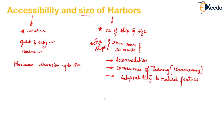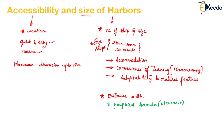Entrance width is one of the important criteria. We have an empirical formula for calculating the entrance width, given by Stevenson — it has limited application. The formula is: H = 0.0127 × √(l/L) − 0.027 × ⁴√D × (1 + L/L) × capital H. Here capital H is the height in metres of unrestricted waves, especially at the entrance of the harbour.